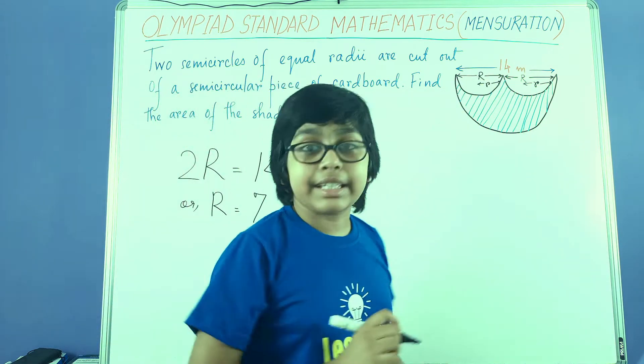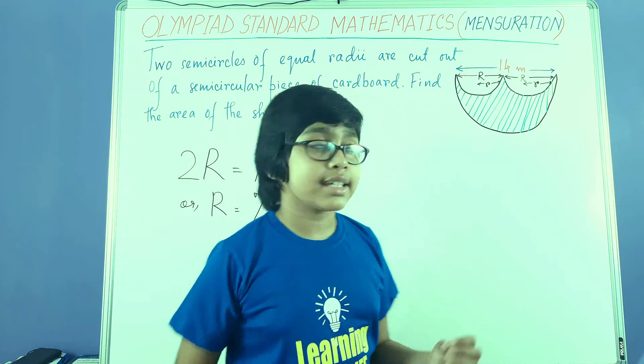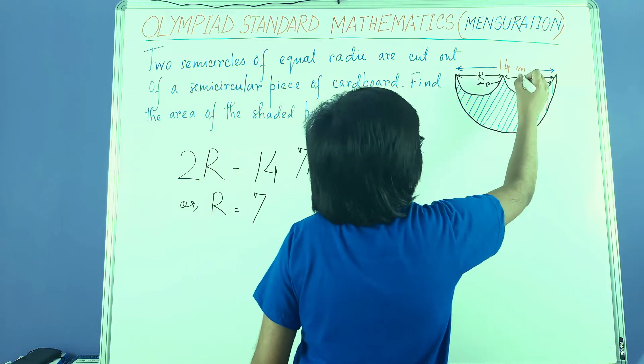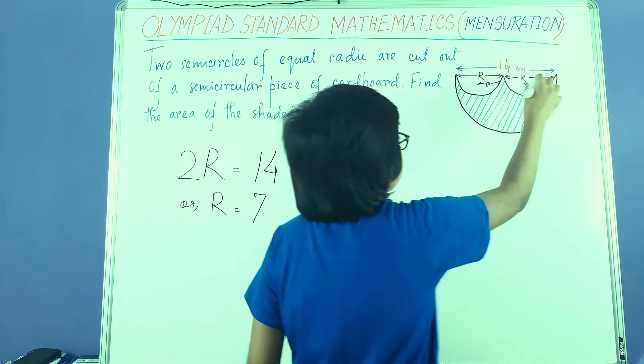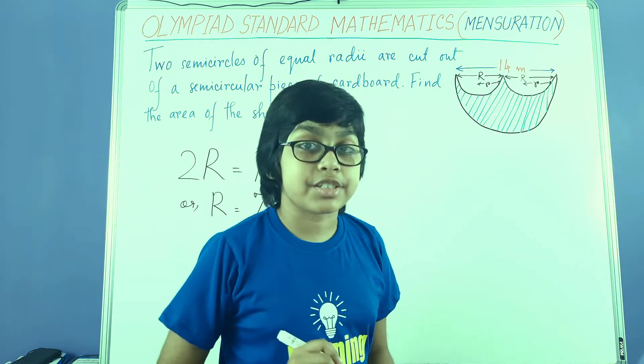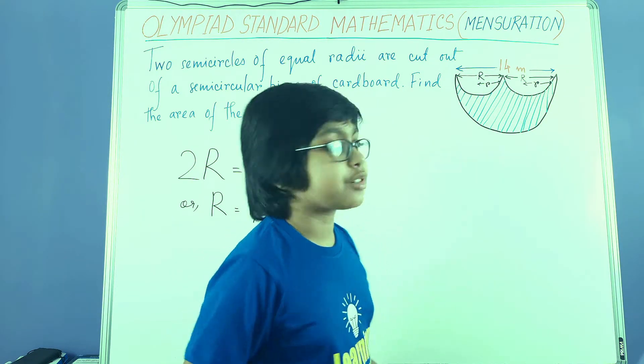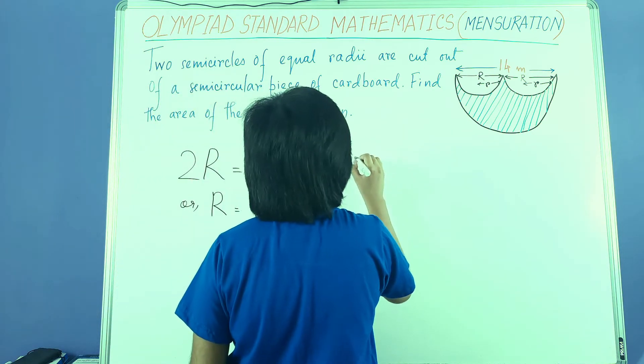Now, we need to find the radius of the smaller semicircles. And here in this case, small r, capital R is the diameter for the smaller semicircles, and small r is the radius of the small semicircle. Accordingly, we make our equation again.